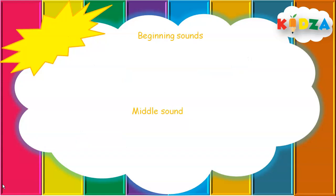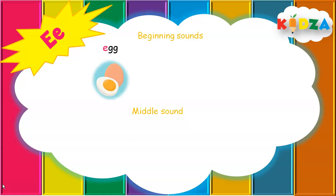The next letter is E. Let's go through the beginning sound pictures. Short sound E — E as in E: E-G-G, Egg. Long sound E — the letter's name itself. E as in Eagle: E-A-G-L-E, Eagle.